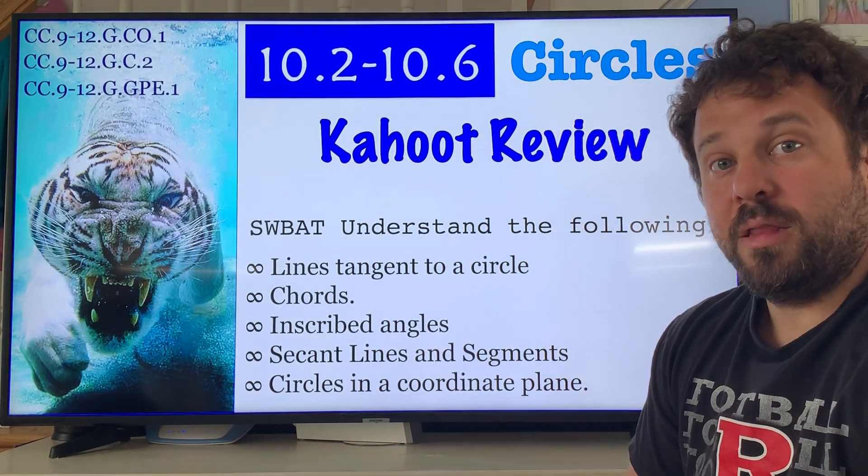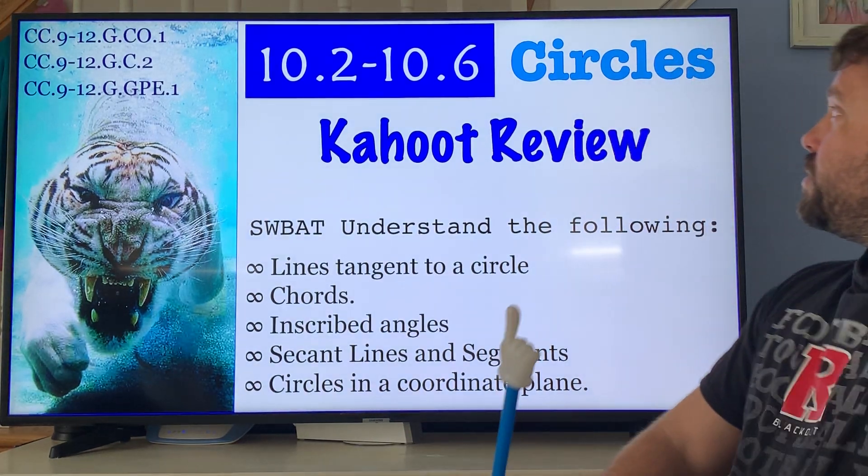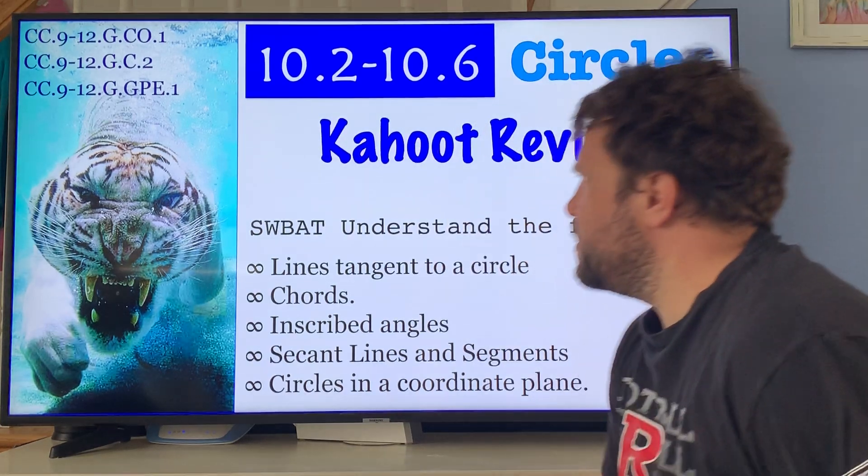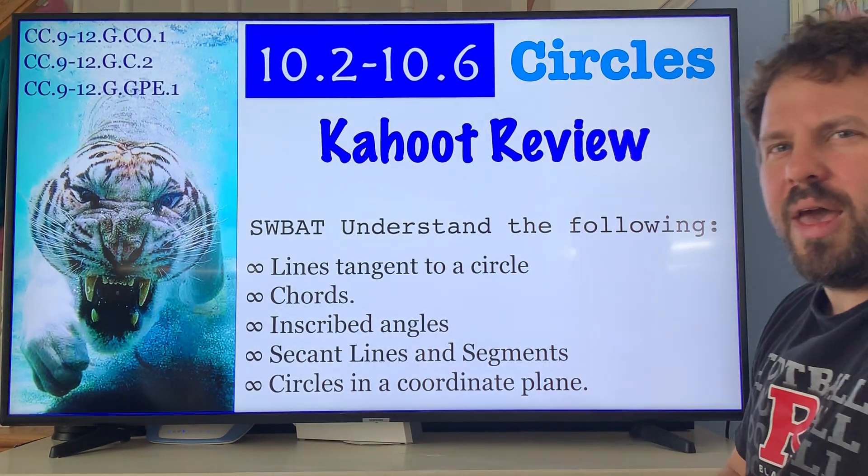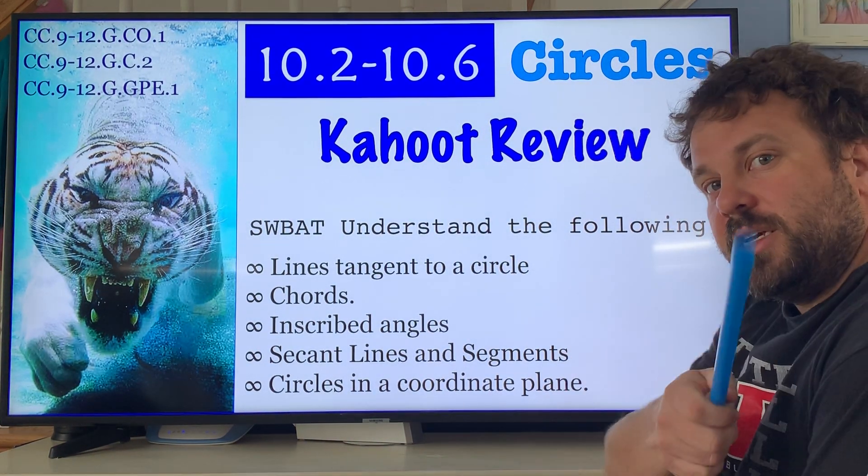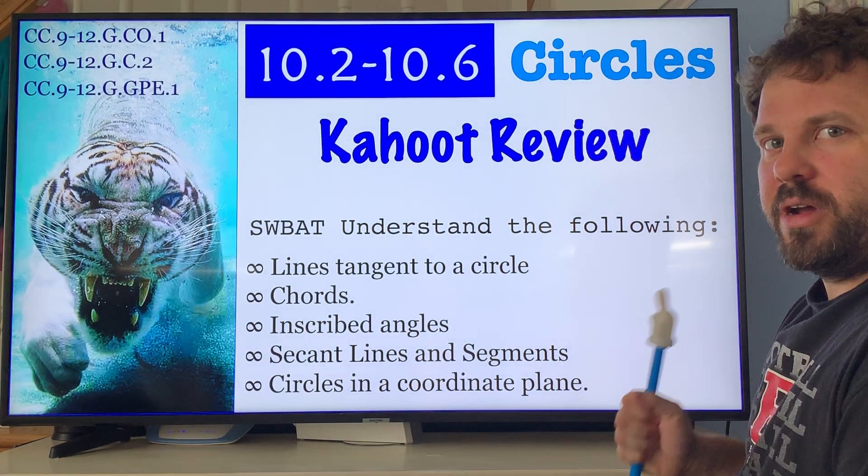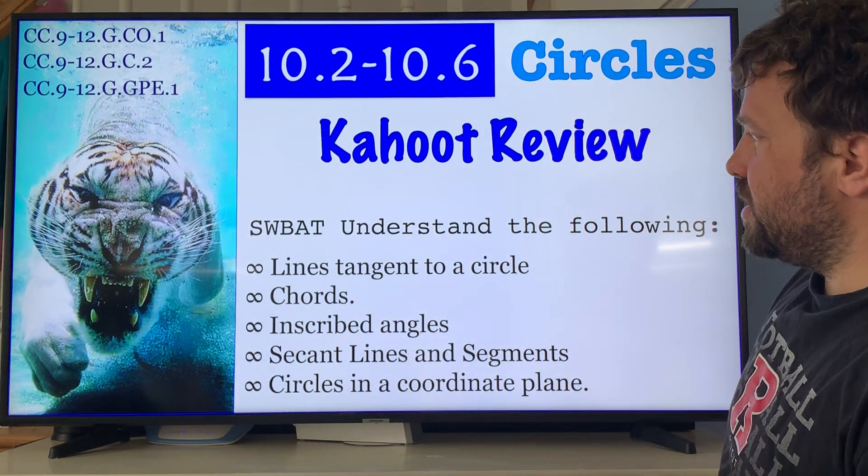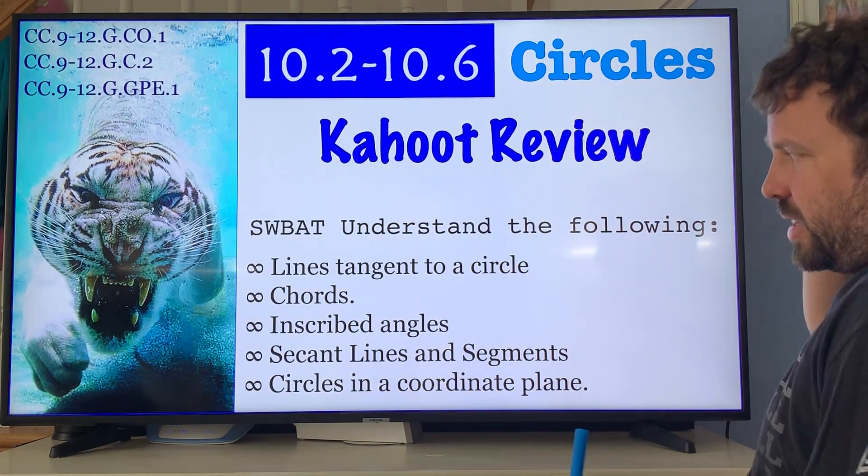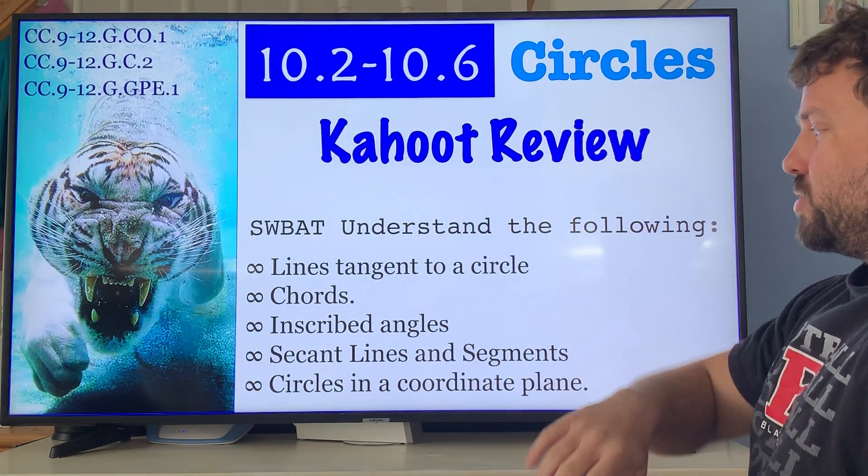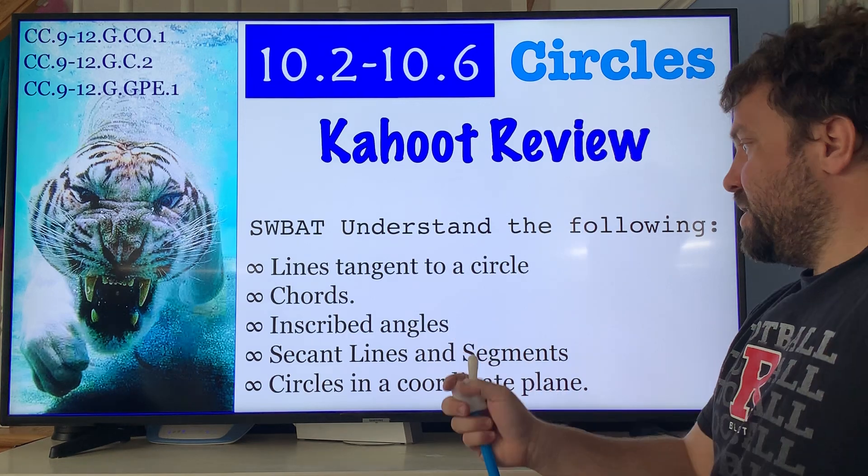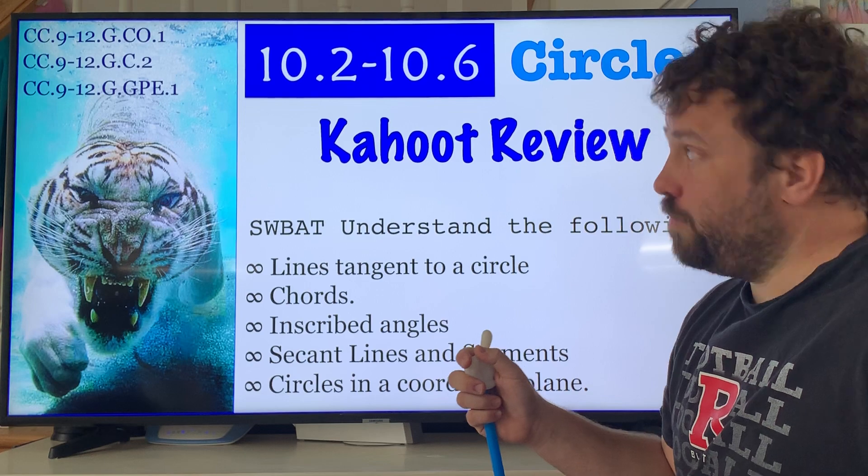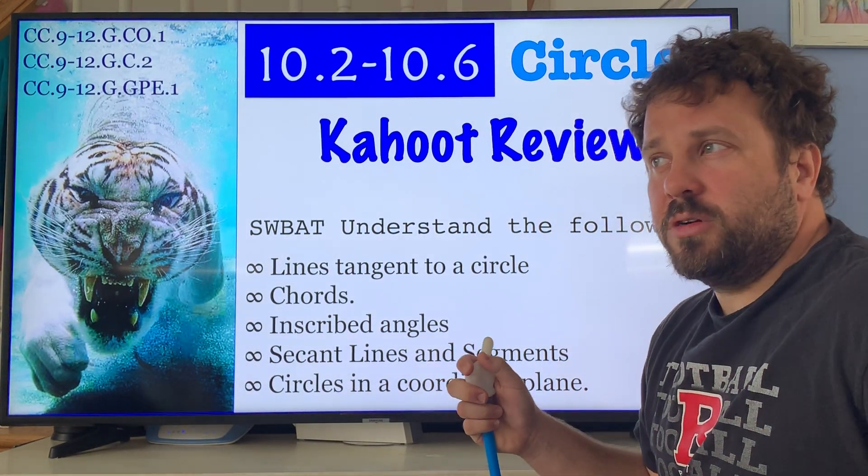I'm back, last part of Chapter 10 circle Kahoot review. What we're doing in this Kahoot review is reviewing everything we've been discussing since we went over sector area, circumference, arc length and stuff like that. We're going to understand the following: lines tangent to a circle, chord, inscribed angle, secant lines and segments, and circles in a coordinate plane.